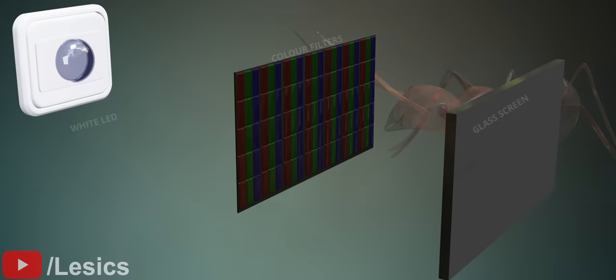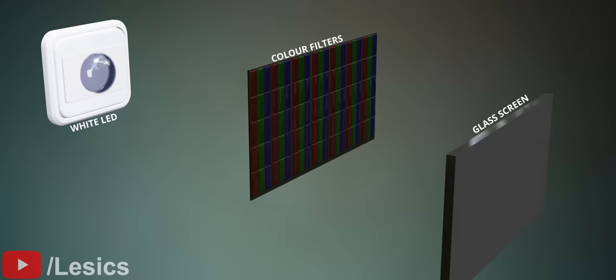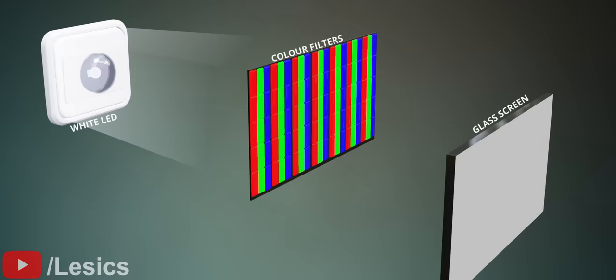However, this arrangement just produces a white color when the backlight is turned on, or a black color when the backlight is turned off. To produce different colors, we must be able to control the intensity of light for each color filter independently.